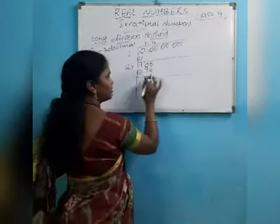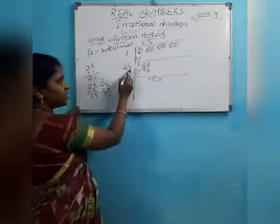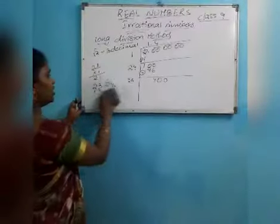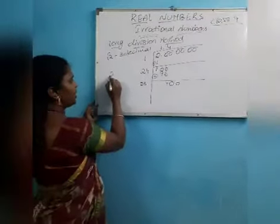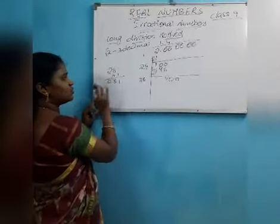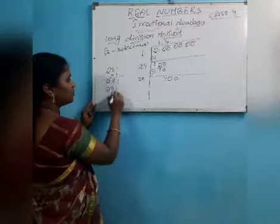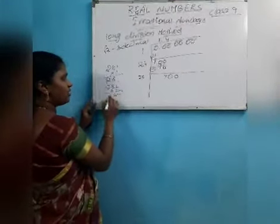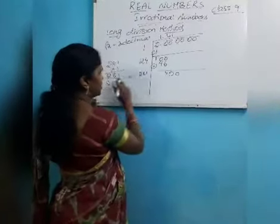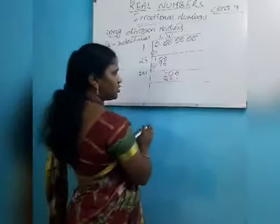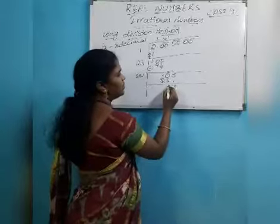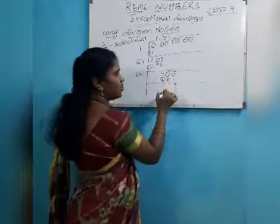Borrow the next two zeros, giving 400. The last digit is 4; double it: 4 plus 4 is 8, so we have 28. After 28 take one number and multiply by the same number. I take 1: 281 times 1 is 281. 282 times 2 would be 564 — more than 400 — so I take 1. The result is 281. Subtract: borrow as needed. 10 minus 1 is 9, 9 minus 8 is 1, borrow from 4 giving 3, 3 minus 2 is 1. Remainder is 119.